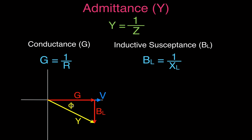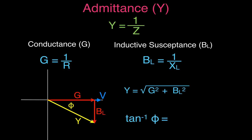In the next video we'll do an example problem showing how to calculate all these values — current, impedance, and admittance. The total admittance is Y = √(G² + B_L²), and the phase angle is found using: tan(θ) = B_L / G, which is inductive susceptance (opposite) over conductance (adjacent).